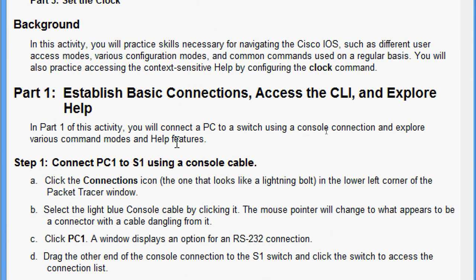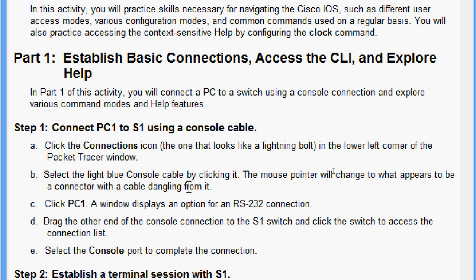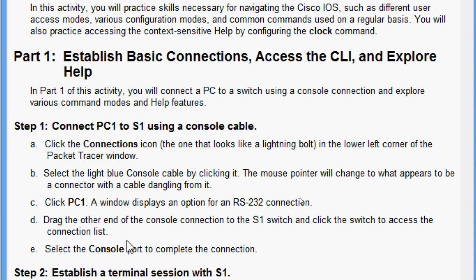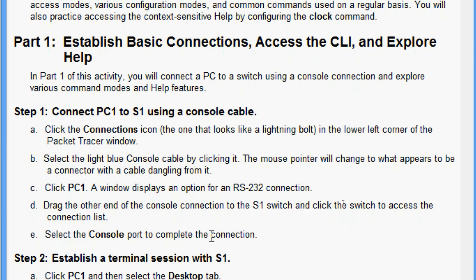In Part 1 of this activity we will connect a PC to a switch using a console connection and explore various command modes and help features. Step 1: connect PC1 to S1 using a console cable. Click the connections icon - the one that looks like a lightning bolt in the lower left corner of the Packet Tracer window. Select the light blue console cable. Click PC1 - a window displays an option for an RS-232 connection. Drag the other end to the S1 switch and select the console port to complete the connection.